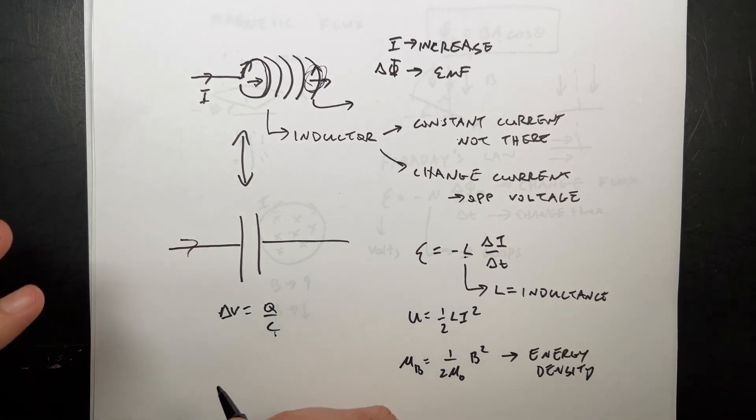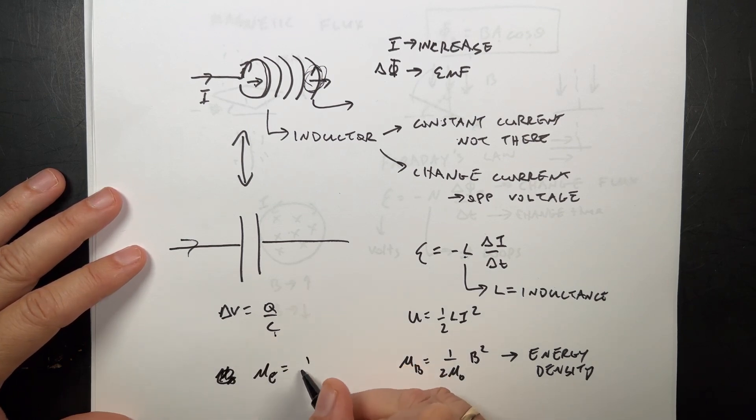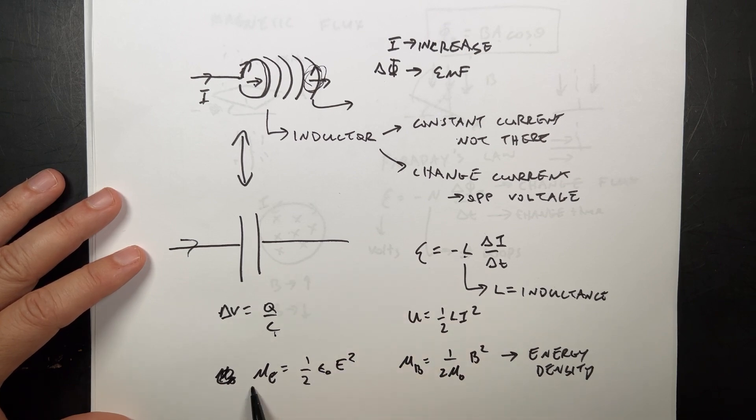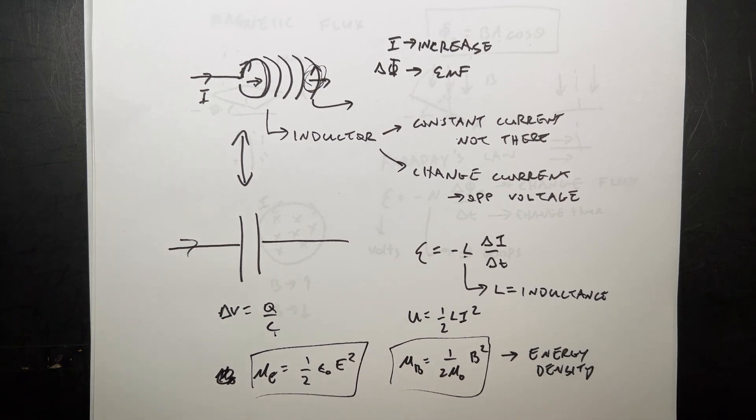And just a reminder, we had the same thing. Mu E is 1 over 2 epsilon naught E squared. That's the energy density for the electric field. So, the electric and the magnetic field both have energy stored in them, and that's kind of cool.